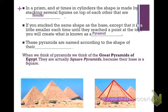Pyramids are named according to the shape of their base. When you think of pyramids, we think of the Great Pyramids of Egypt, and they're actually square pyramids because their base is a square.